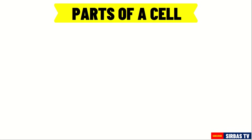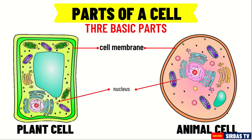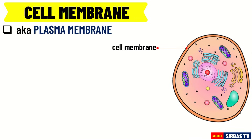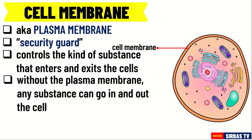The two types of cells that you are going to encounter in this video are animal and plant cells. Whether animal or plant cells, and even other organisms like bacteria, share three basic parts. These are cell membrane, nucleus, and the cytoplasm. Cell membrane is also known as plasma membrane. It is the outer covering of the cell which covers the surface of the cell. It is like a security guard that controls the kind of substance that enters and exits the cells. It also protects the cell from the outside environment. Without the plasma membrane, any substance can go in and out of the cell. The cell may be affected by the exit of needed substances or entrance of unneeded or poisonous substances that may lead to the death of the cell.